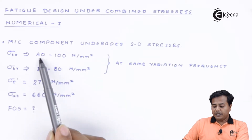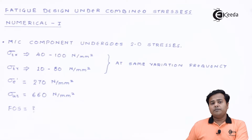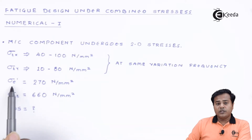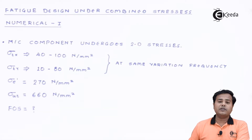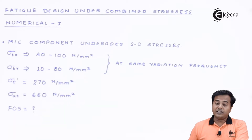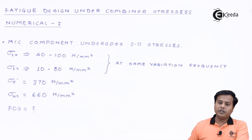So if the X variation happens in a given number of seconds, the same duration applies to the Y variation, meaning the frequency or phase lag will be minimum in both cases since they alternate with the same frequency. The corrected value of endurance limit is given as 270 N/mm². We have already solved numericals where correction factors were applied, so this value is taken directly.